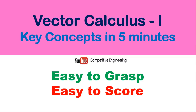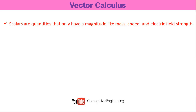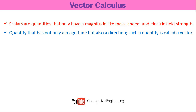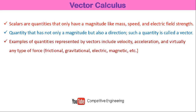In vector calculus, quantities can be divided into scalar quantities and vector quantities. Scalars are quantities that only have magnitude — examples are mass, speed, and electric field strength. Other quantities have direction along with magnitude; such quantities are called vectors. Examples are velocity, acceleration, and virtually any type of force: frictional force, gravitational force, electric and magnetic force, etc.